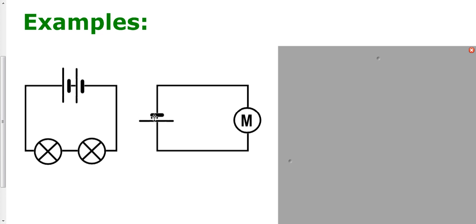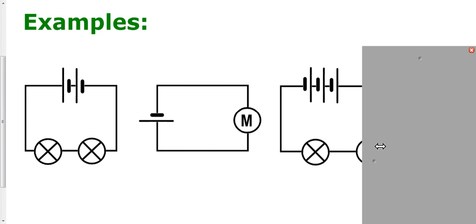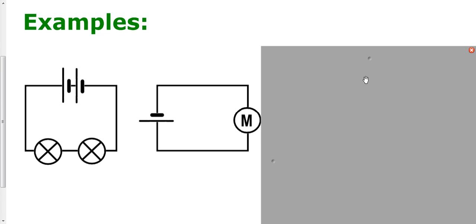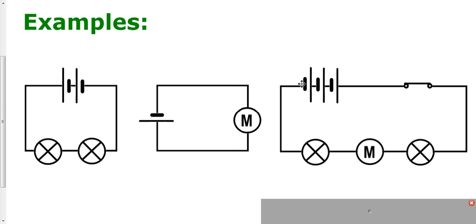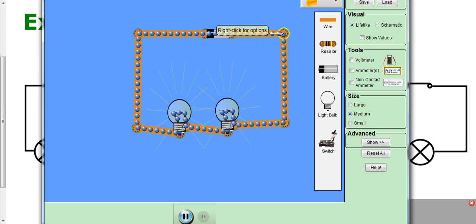Here's another circuit drawn on its side. It's got a single cell and a motor. Once again, these components are in a single loop with no branches — it's a series circuit. And a final example: this has got loads of components. We've got three cells, a closed switch, a bulb, a motor, and a bulb, but they're all in one single loop, so this is a series circuit.